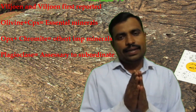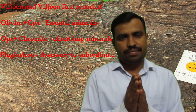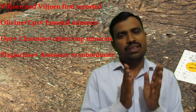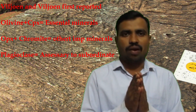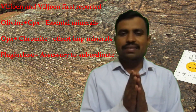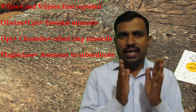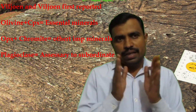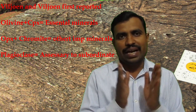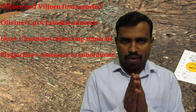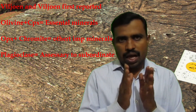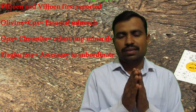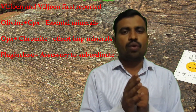Komatiite is a very unique rock. Viljoen and Viljoen first recognized this rock in the world. This rock is the only example of extrusive ultramafic igneous magma. Komatiites essentially consist of olivine and clinopyroxene. Orthopyroxene and chromite are other important minerals also present in this komatiite rock.